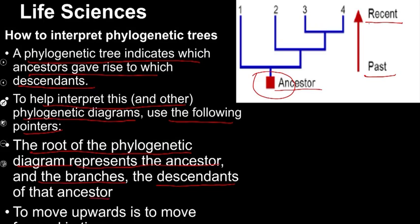We have the descendants of that ancestor — in other words, they came from that ancestor. The tree kind of branches out and gives rise to two new descendants. These descendants can then undergo further speciation, and we have more descendants forming each time.